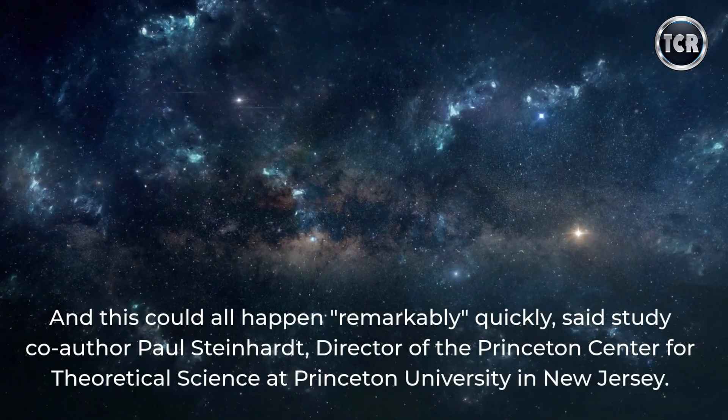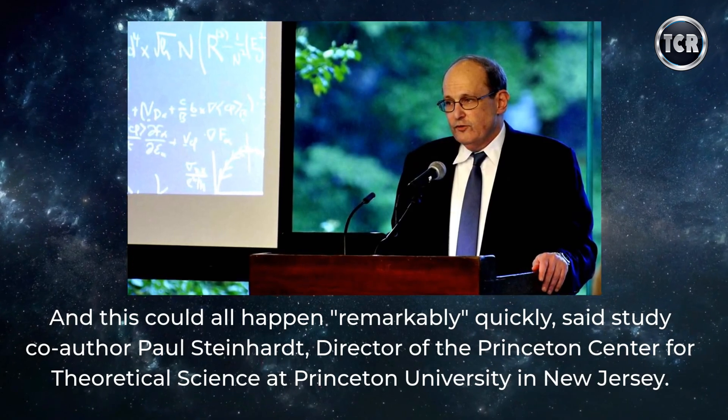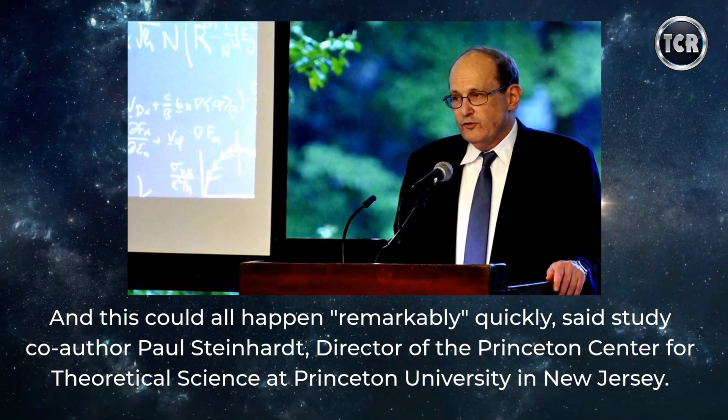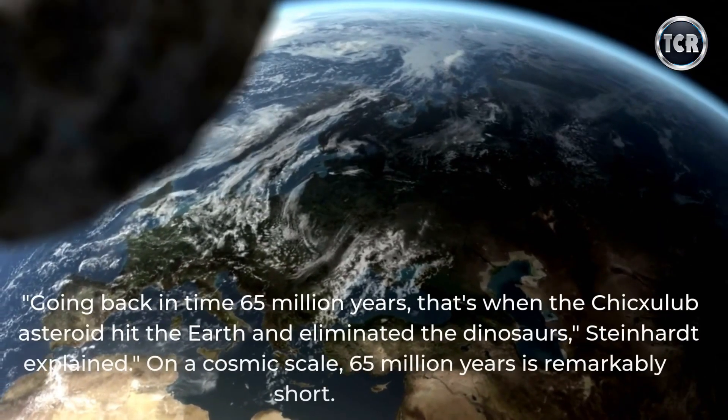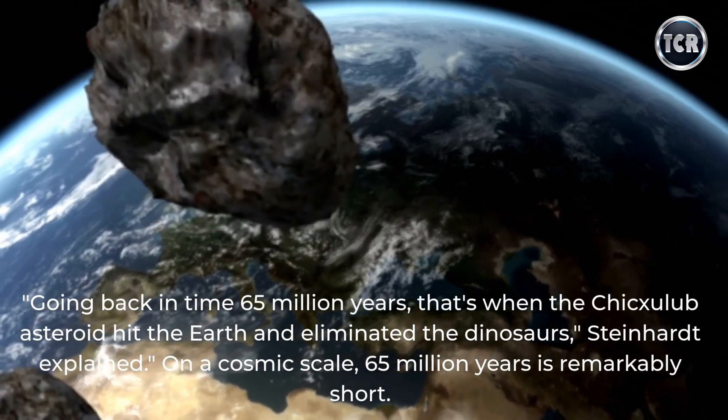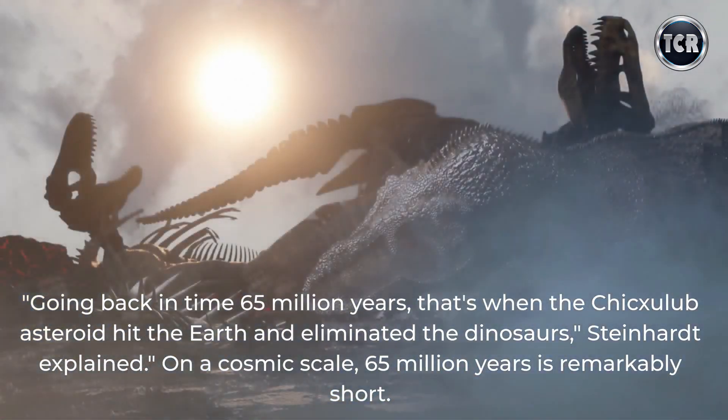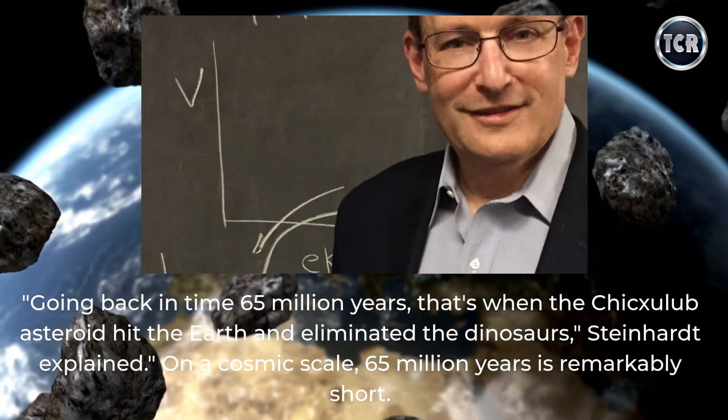And this could all happen remarkably quickly, said study co-author Paul Steinhardt, director of the Princeton Center for Theoretical Science at Princeton University in New Jersey. Going back in time 65 million years, that's when the Chicxulub asteroid hit the Earth and eliminated the dinosaurs. On a cosmic scale, 65 million years is remarkably short.